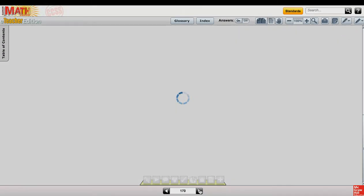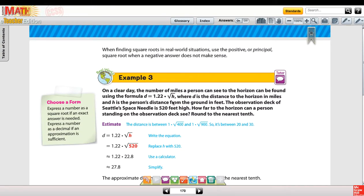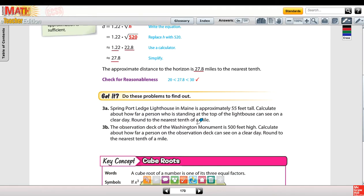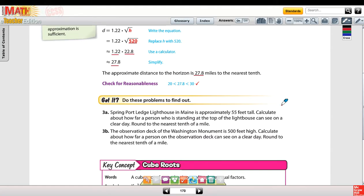Next, on page 170, we're talking about formulas that use the square root. In this case, distance equals 1.22 times the square root of h, and we're just substituting numbers into this equation there by putting in 520 in for the height of h, and then we can use a calculator to find that square root, and then multiply by 1.22 to get the 27.8 answer, so about 27.8 miles. For 3a, we have a 55-foot fall, so we're going to use that same formula of D equals 1.22 times the square root of 55, and then go ahead and use your calculator to multiply that out, and you should get 9 miles.